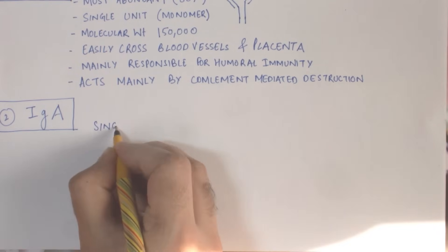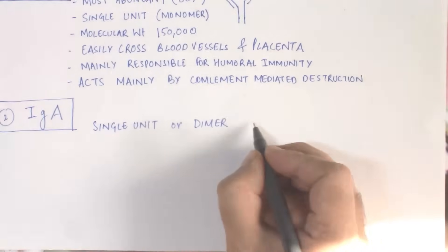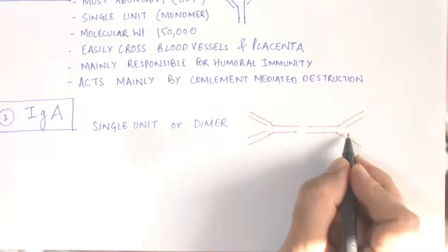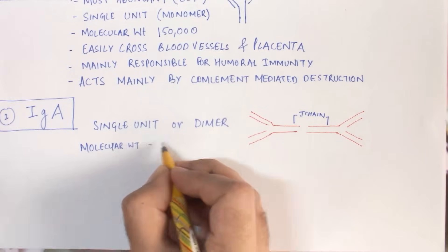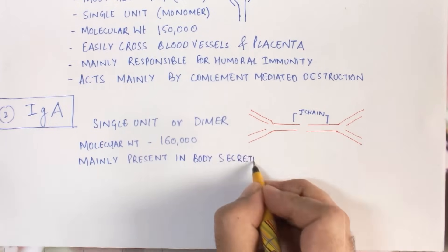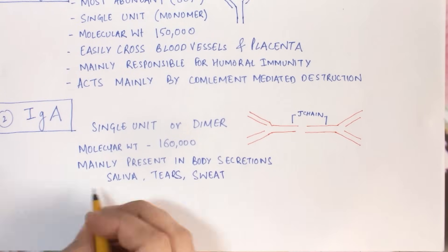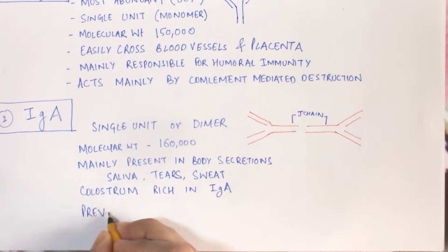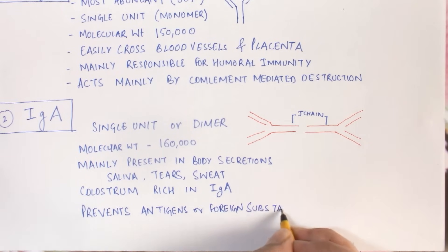IgA can exist as a single unit or a dimer. When it exists as a dimer, it consists of two antibodies joined together by a J-chain polymer. The molecular weight of IgA is 160,000, and it is mainly present in body secretions like saliva, tears, and sweat.